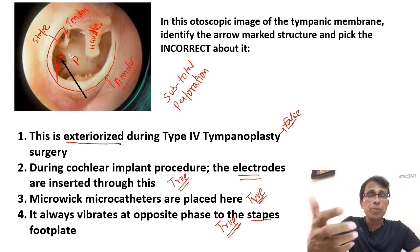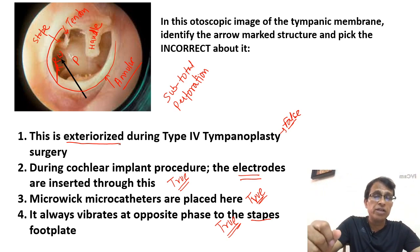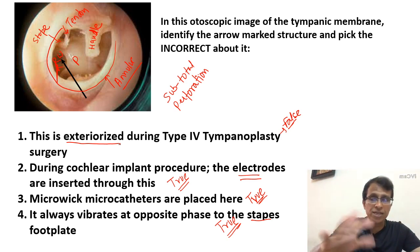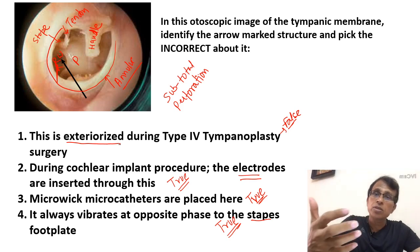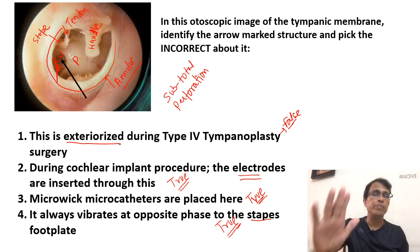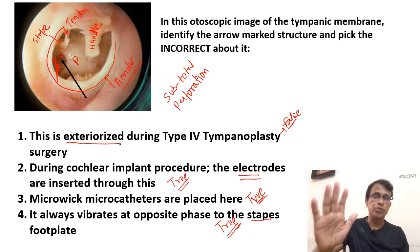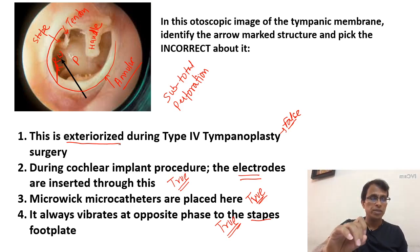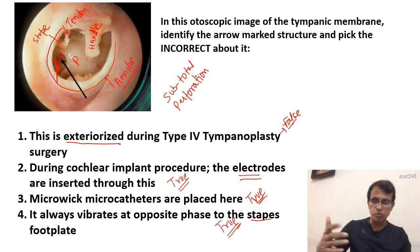Tympanoplasty is another very important topic. There are 6 types of tympanoplasty — 1, 2, 3, 4, 5, 6 — and you have to know everything about all 6 types, which are very commonly asked in exams. That's all about this question and the round window.